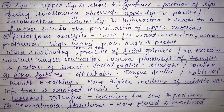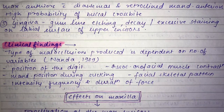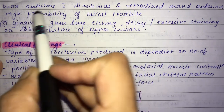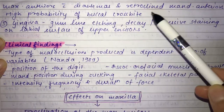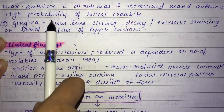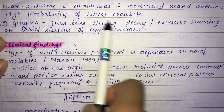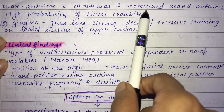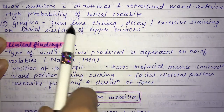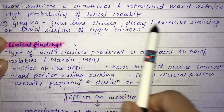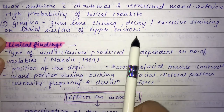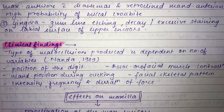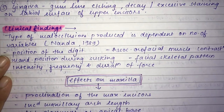Intraorally, the size and position of the tongue are examined, along with dental alveolar structures. Findings include proclined maxillary anteriors with diastema, retroclined mandibular anteriors, and a high probability of buccal crossbite — posterior crossbite. There may be decay and excessive staining on the labial surface of the upper incisors.